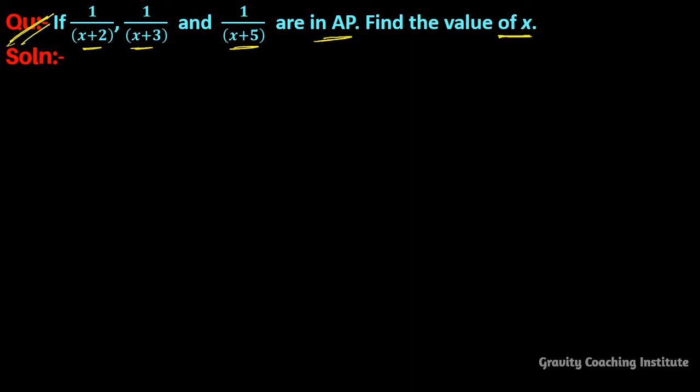According to the question, we know that in AP the difference between two consecutive terms are constant. So a2 minus a1 equals a3 minus a2. And now we will put the values in this.